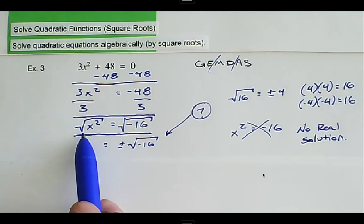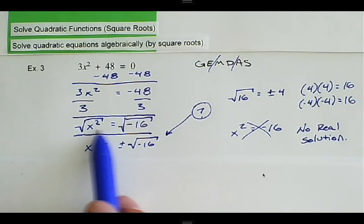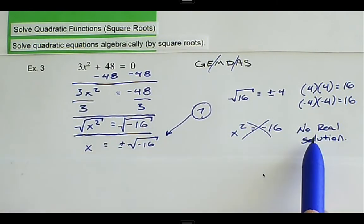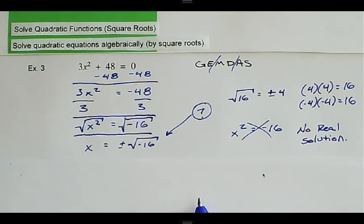So we can write down no real solution. Anytime that we go to take the square root of a negative value, the answer will be no real solution. Let's take a look at what that looks like in a graph.